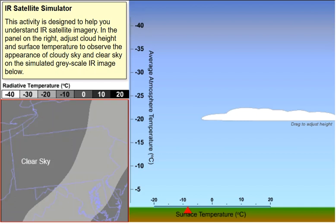Let's start with this infrared satellite simulator, which allows us to control surface temperature and cloud height. We'll start with a situation where the surface temperature is around minus 8 degrees Celsius or about 18 degrees Fahrenheit, so it's a chilly morning. And we have a mid-level cloud, which shows up over here in the brighter gray on the simulated grayscale infrared image.